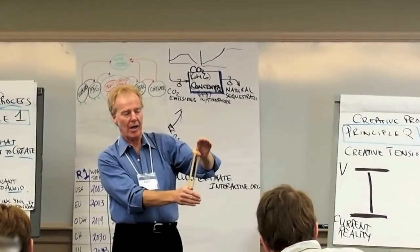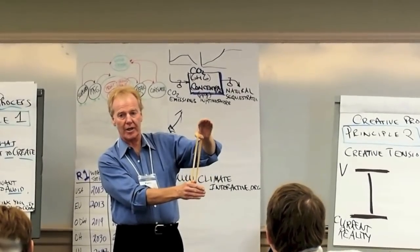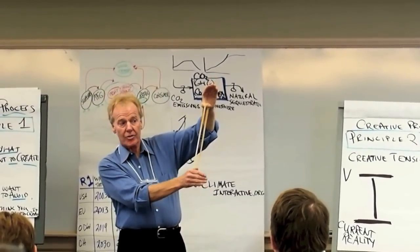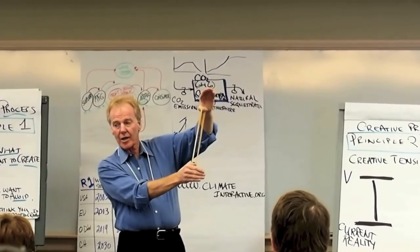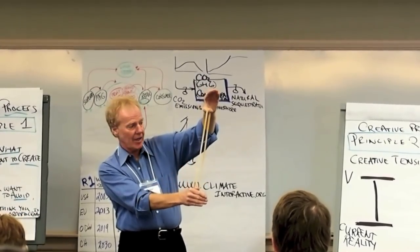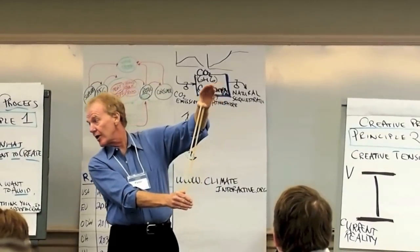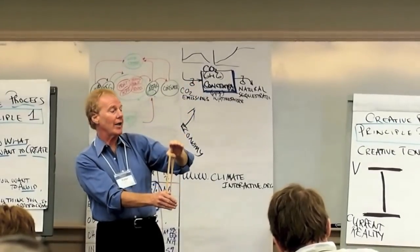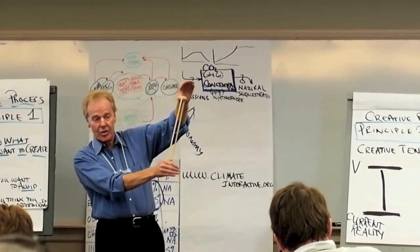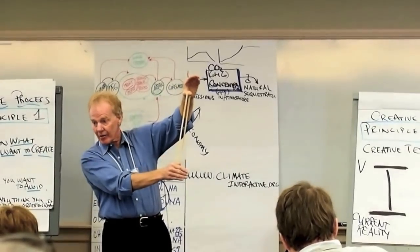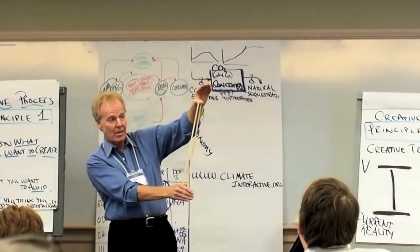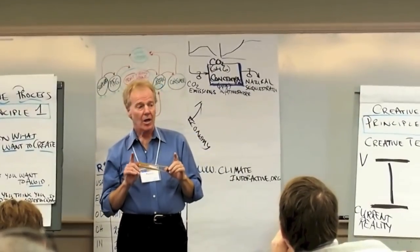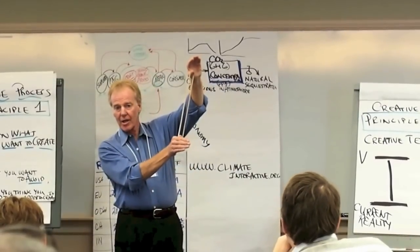How do you generate the gap? Well obviously when you start to articulate a vision, you generate that energy. But just as much, when you start to see more clearly the current reality, that also generates the vision. So there's two fundamental ways to generate creative tension. One is by articulating and getting committed to a vision, and the other is by getting clearer about what is. So to put it really simply, the two sources of creative tension are aspiration and the truth.